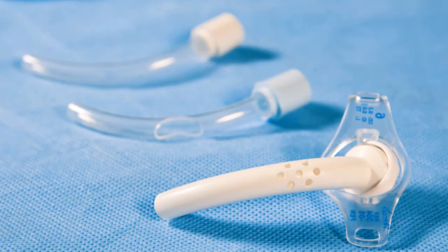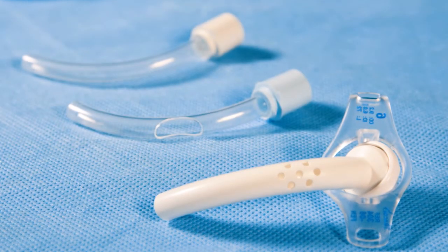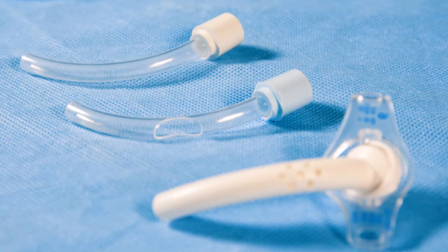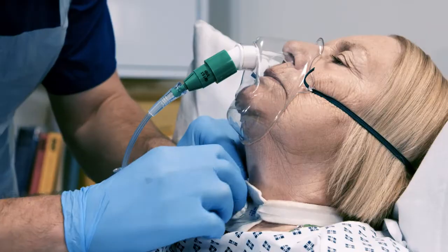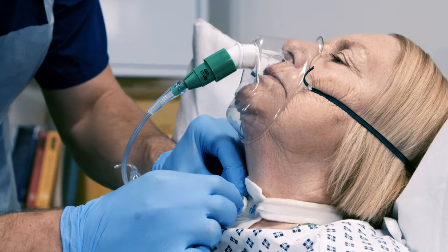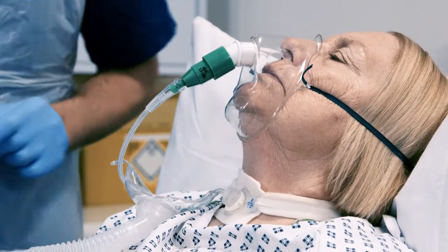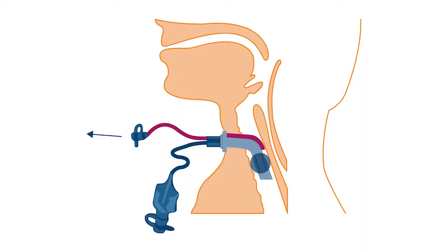We have inner cannulas in tracheostomy tubes to try and prevent complete tracheostomy obstruction. If we can just change the inner cannula regularly, that saves us having to change the whole tube in an emergency.